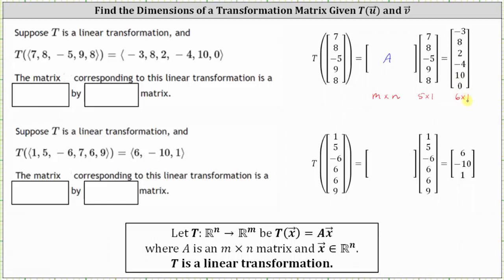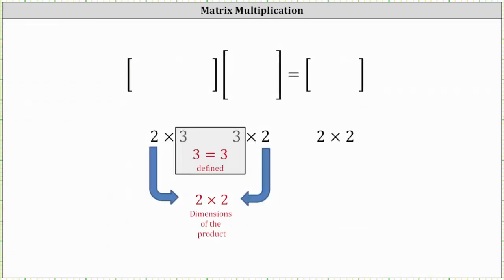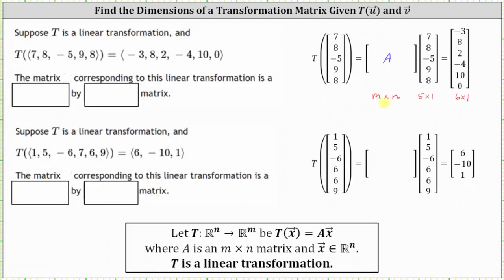For a quick review, when multiplying two matrices, in order for the multiplication to be defined, the number of columns in the first matrix must equal the number of rows in the second matrix, and then the outer dimensions determine the dimensions of the product. So going back to our example, N must equal five, and then the product would be an M by one matrix, which is a six by one matrix, and therefore M is equal to six. The transformation matrix must be a six by five matrix.